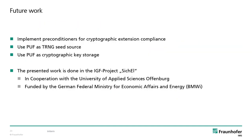During the next months, we will be implementing the signal processing logic to precondition the raw PUF data, and we will implement an interface compatible with the Cryptographic ISA extension. Because our PUF produces a random value for each input parameter — so-called challenge — we will test its performance as a seed generator for TRNGs. In the future, we will work on the stability of the PUF and on error correction mechanisms so it can be used as a secure key storage element and in challenge-response-based protocols for authentication. The presented work is done in the IGF project Sichel in cooperation with the University of Applied Sciences Offenburg and funded by the German Federal Ministry of Economic Affairs and Energy.